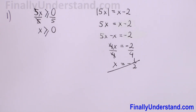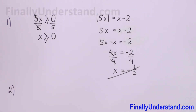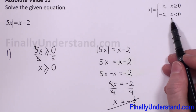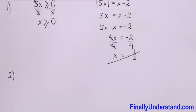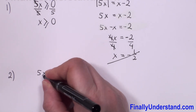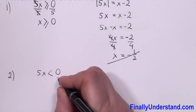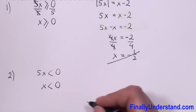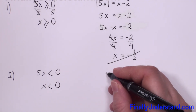Now we can go to the second case. First, we have to find the domain. Whatever is between the absolute value bars must be less than 0. So we have 5x is less than 0. We divide both sides by 5, so we have x is less than 0. We have the domain.